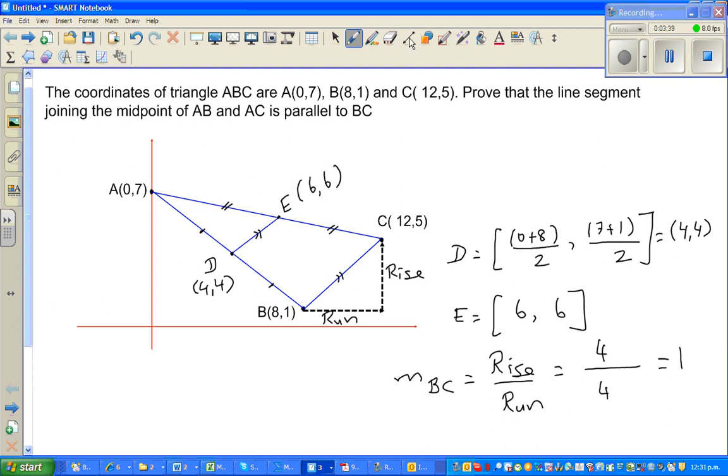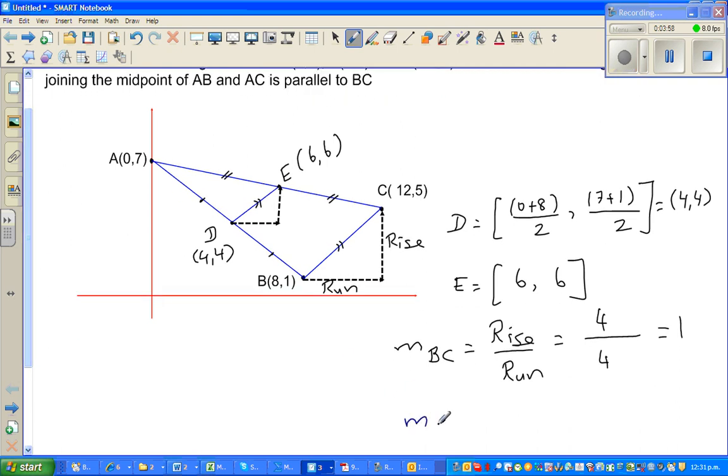Okay, now the same logic applies for the gradient of DE. You look at the run, this is your run, and this is your rise. Okay, so the same logic. Let me change color. So now m_DE. m_DE stands for the gradient of DE, is rise over run. So when you're looking at run, from 4 to 6, the run is 2, and the rise is also 2 from 4 to 6, so the gradient is 1.